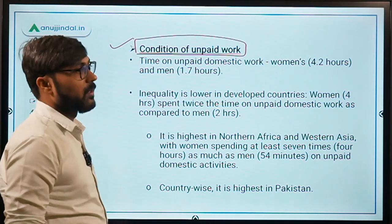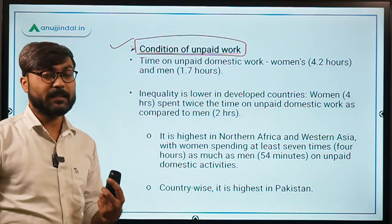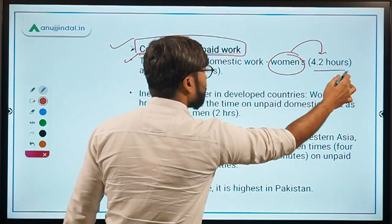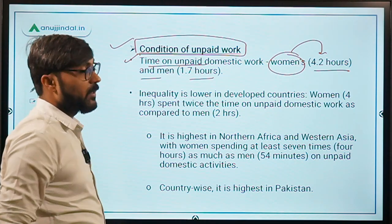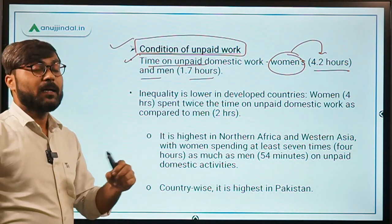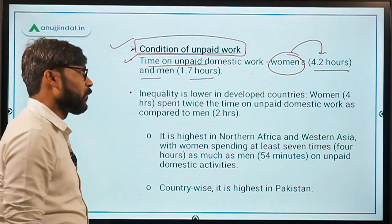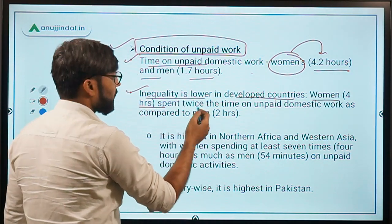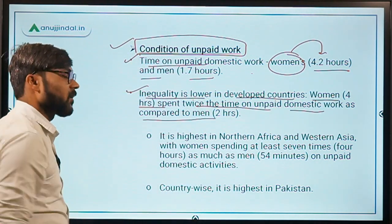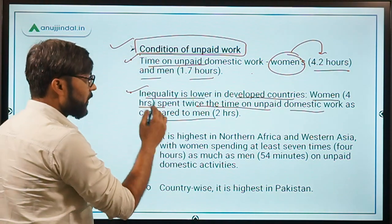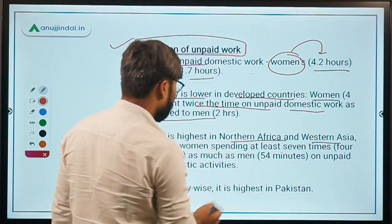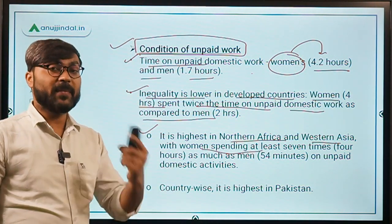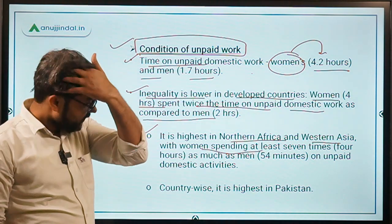Regarding unpaid domestic work, women spend 4 hours on unpaid domestic work compared to men who spend 1.7 hours — meaning women spend significantly more time on unpaid domestic work than men. The inequality is highest in Northern Africa, where women spend at least seven times the amount of time on unpaid domestic work compared to men.